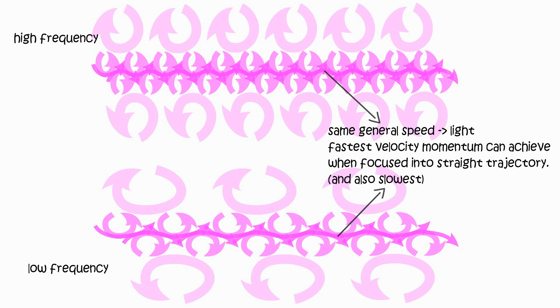Focusing momentum increases field density, increases interaction intensity, thus slowing down momentum. The fastest speed field momentum can achieve while focusing into a general straight trajectory is light speed, and also the slowest.